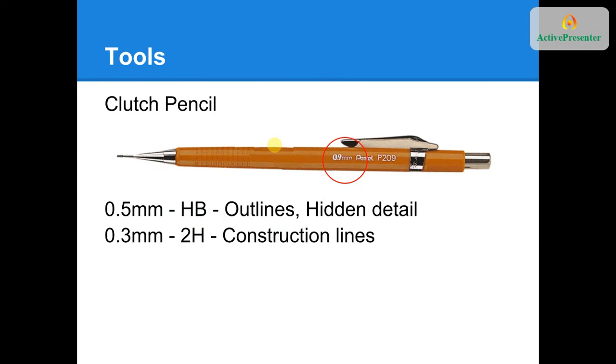The first tool you need to get is a clutch pencil. Drawing with a normal pencil doesn't quite give you the sort of line you need. We usually divide our clutch pencils into two different millimeters. A 0.5mm HB pencil is usually for our outlines and our hidden details within our drawings. We'll get more into that later, don't worry about that for the moment.